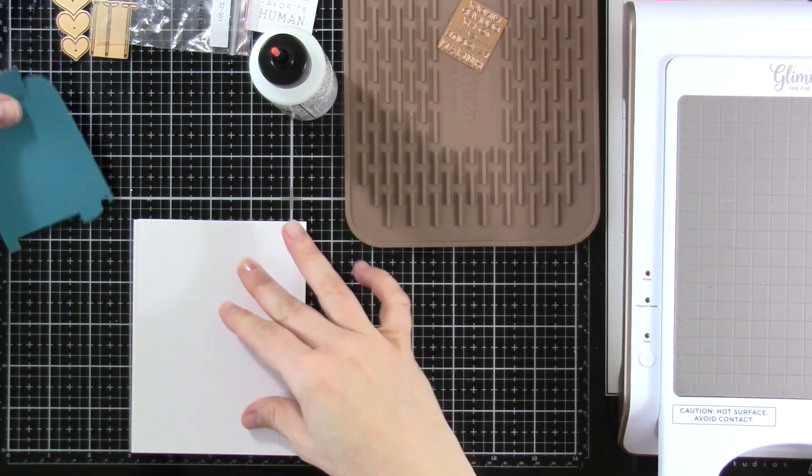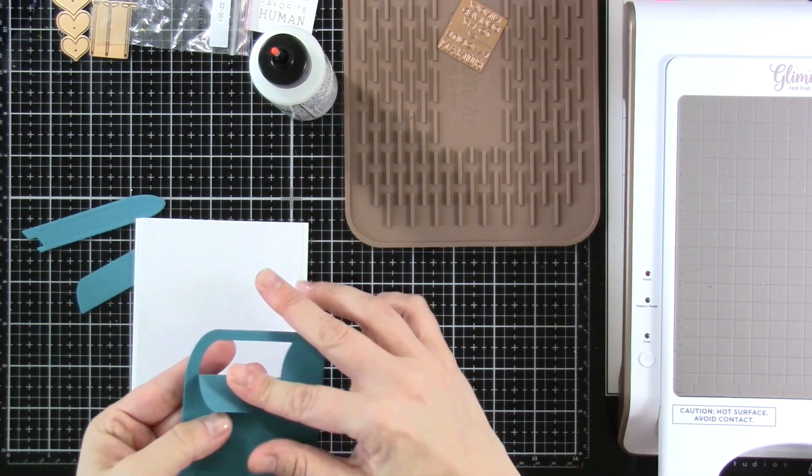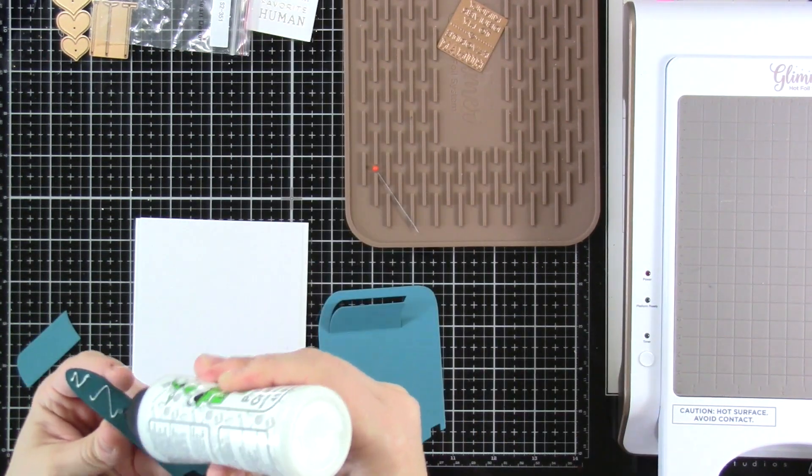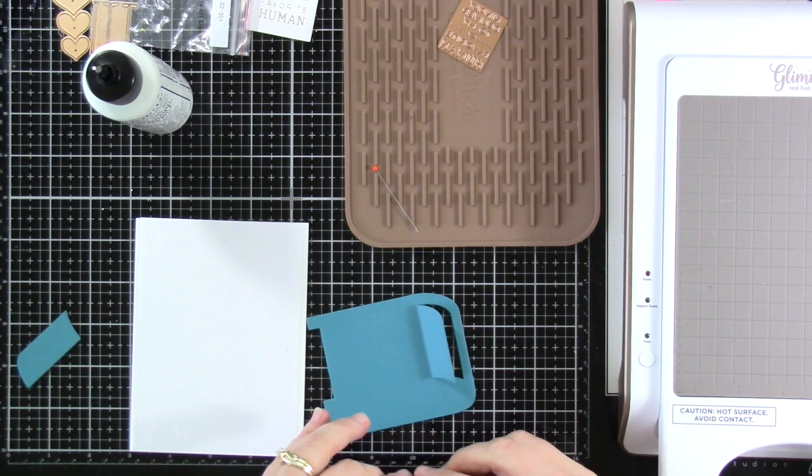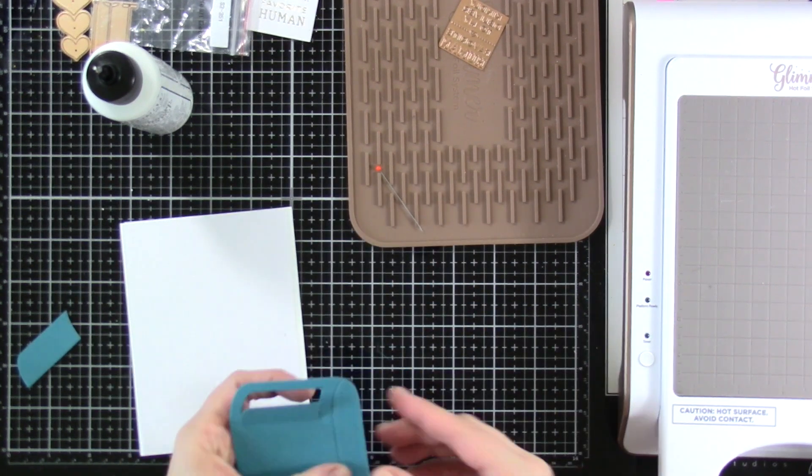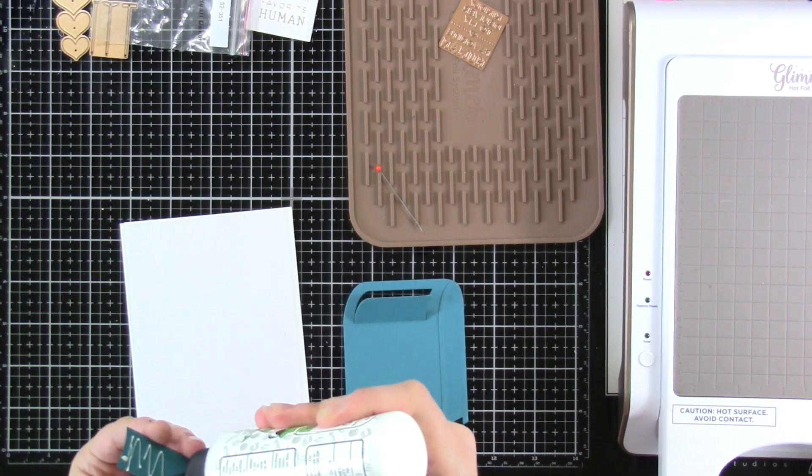I'm going to go ahead and glue that down to my card base, which is an A2 size card base. And then I am going to pull out the mailbox. I went ahead and die cut everything ahead of time. This is what's fun about these dies is you could just go crazy die cutting, just turn on a little bit of music, grab out all the different colors you want and just start die cutting.